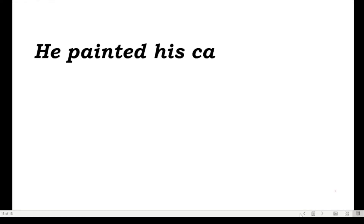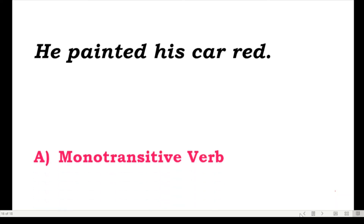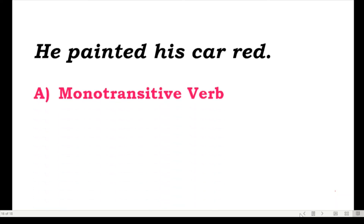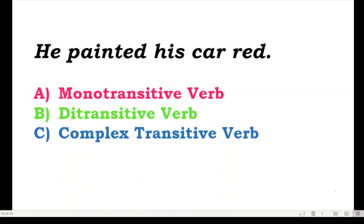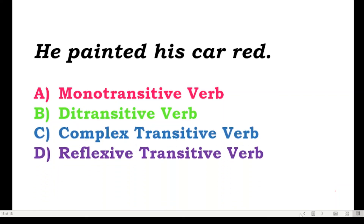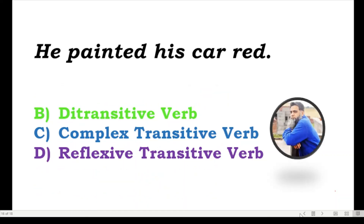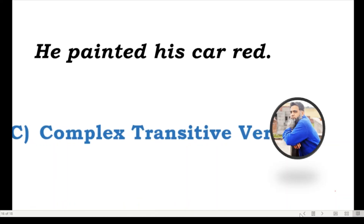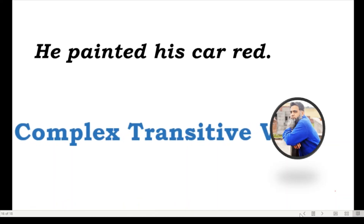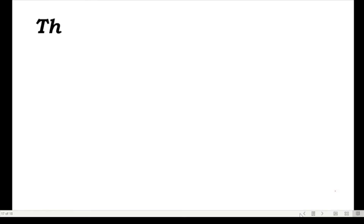The next one: 'He painted his car red.' Here 'painted' is the verb, 'his car' is the direct object, and 'red' is a noun that is a complement of the object. Is it monotransitive, ditransitive, complex transitive, or reflexive transitive? It's a complex transitive verb because we have a direct object 'his car' and an object complement 'red.'